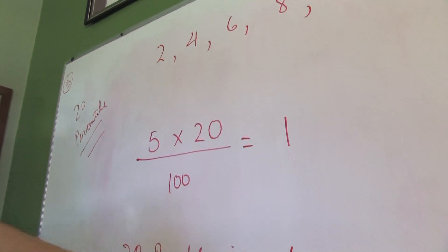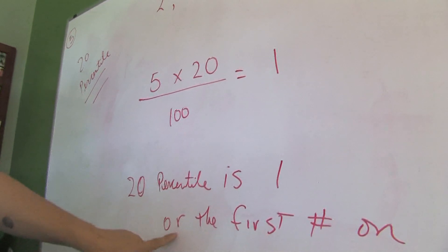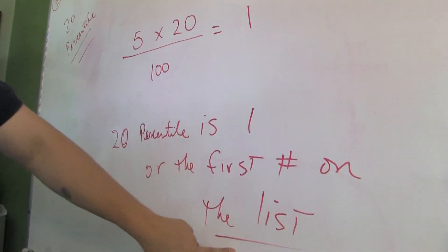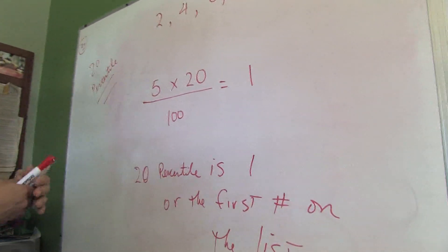Therefore, the 20th percentile is position 1, or the first number on the list. In this case, the 20th percentile is 2.